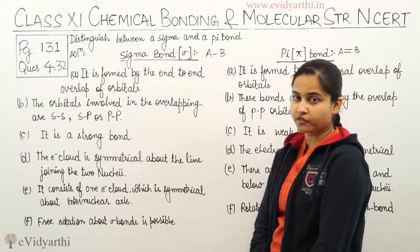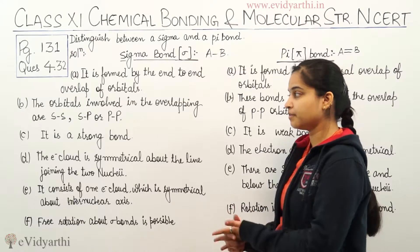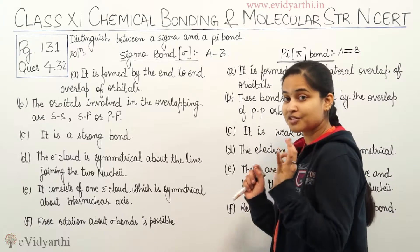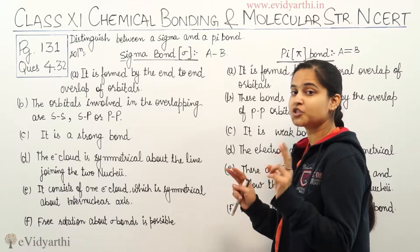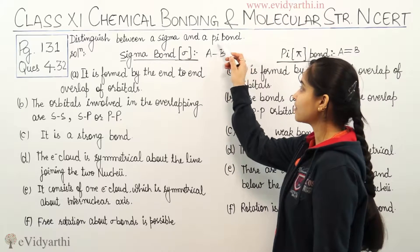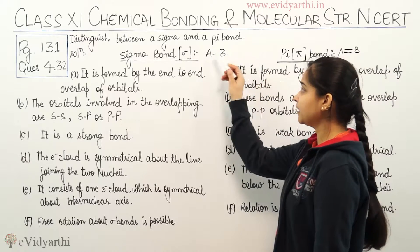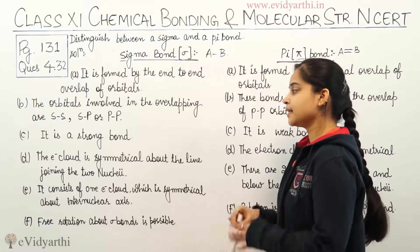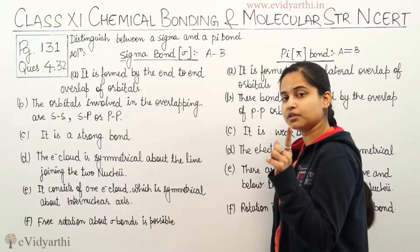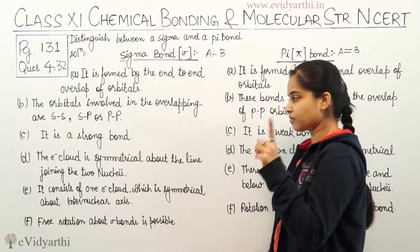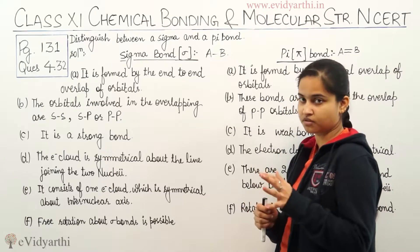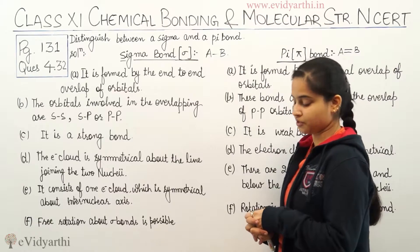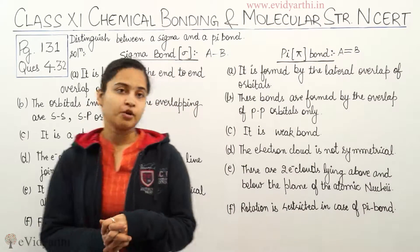The orbitals involved in the overlapping are SS, SP, or PP — it is a strong bond. The electron cloud is symmetrical about the line joining the two nuclei. It consists of one electron cloud which is symmetrical about the inter-nuclear axis. Free rotation about sigma bonds is possible.